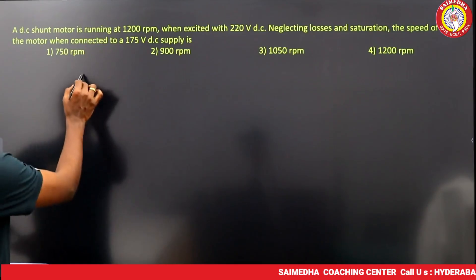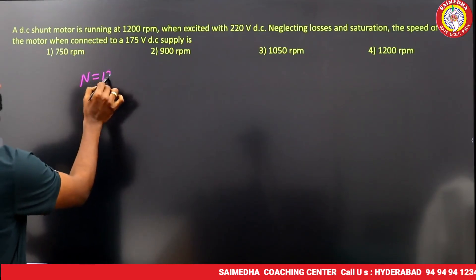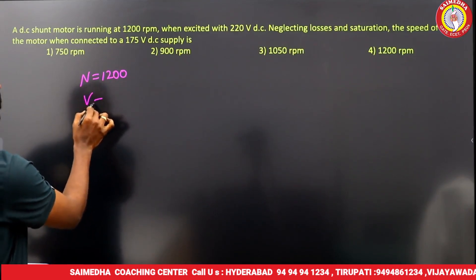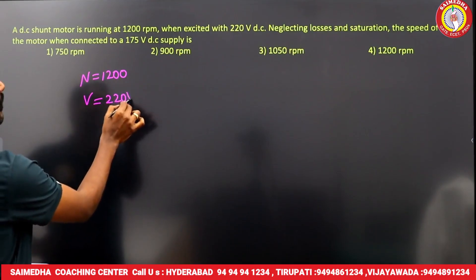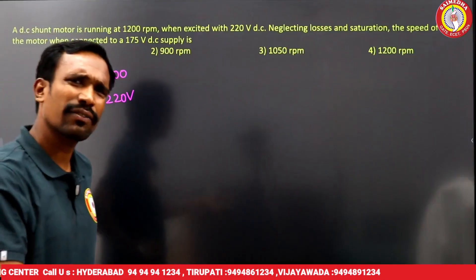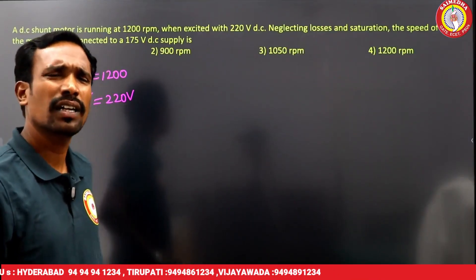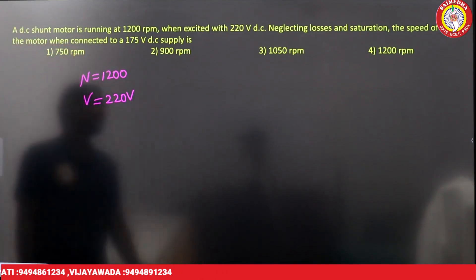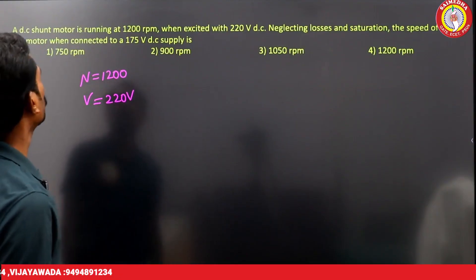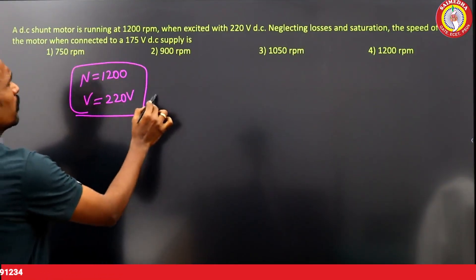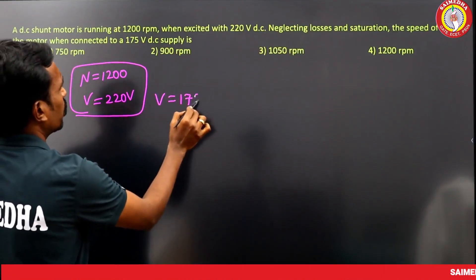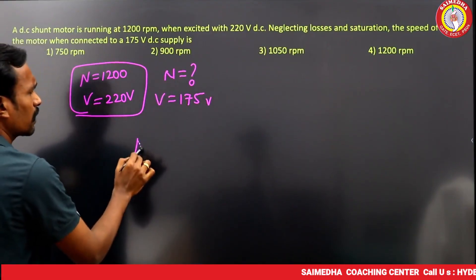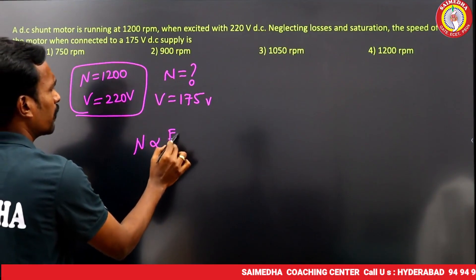Next: a DC shunt motor running at 1200 rpm when excited by 220 volts. Neglecting losses and saturation, what is the speed when the supply voltage is reduced to 175 volts?